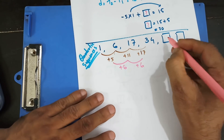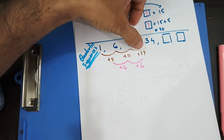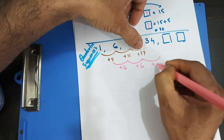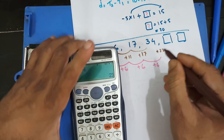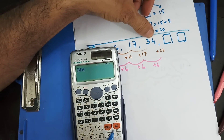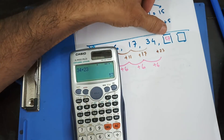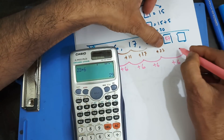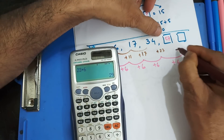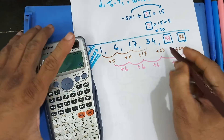Now we are ready to find the next two terms. The next second difference is still plus 6, so 17 plus 6 is 23. Then 34 plus 23 gives 57 as the next term. Then again, 23 plus 6 is 29. And 57 plus 29 gives 86. So 57 and 86 are my next two terms.